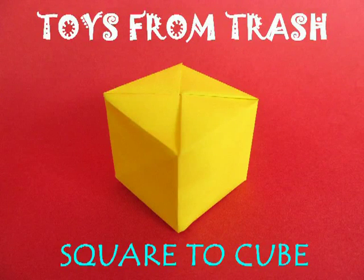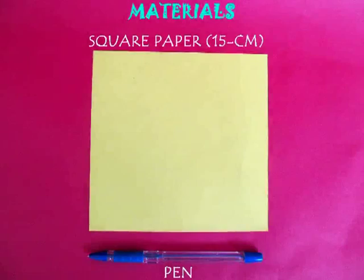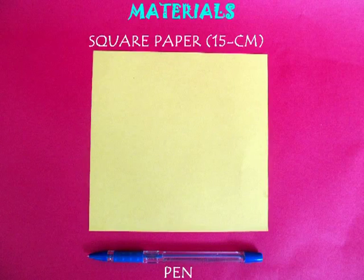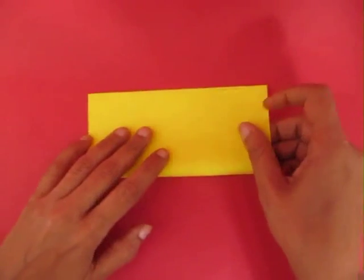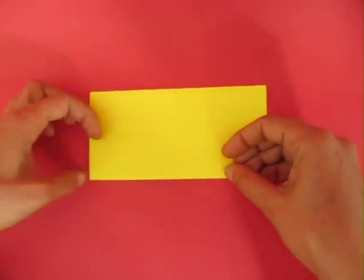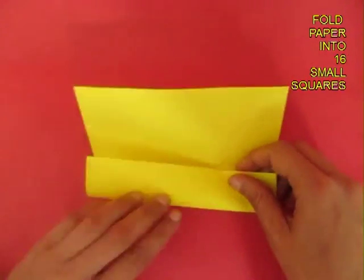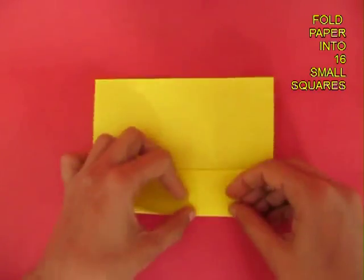From a single square piece of paper you can fold a cube without using any scissors. Take a piece of square paper which is 15 cm on the edge, fold the midline and then open, and fold both the quarter lines.